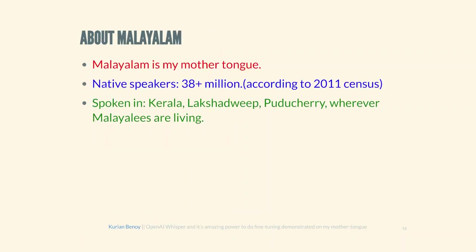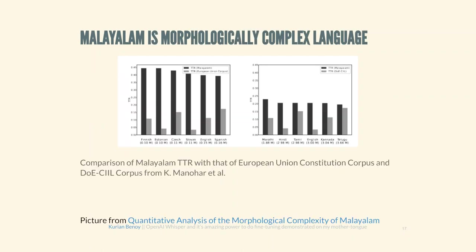Now let me talk about Malayalam. Malayalam is my mother tongue. It has 38 million speakers based on the 2011 census, and it is spoken in Kerala, Lakshadweep, and Kodagu, as well as among the Malayali diaspora, which is a very large number. One thing that makes Malayalam very interesting is that it is a morphologically complex language — far more complex than languages like English. You can learn more from a paper called 'Quantitative Analysis of Malayalam as a Morphologically Complex Language' by Kavya Manohar.